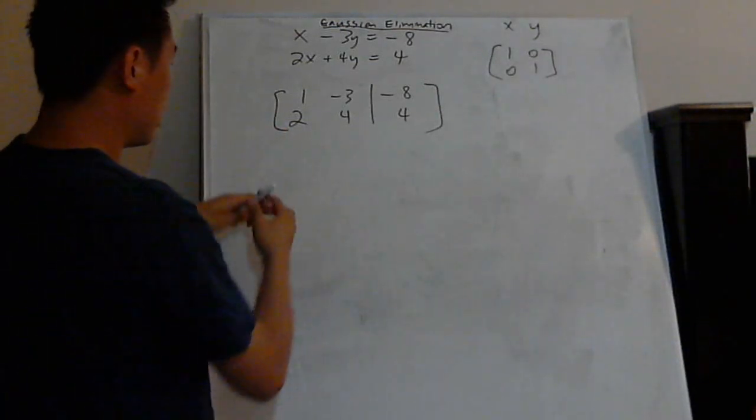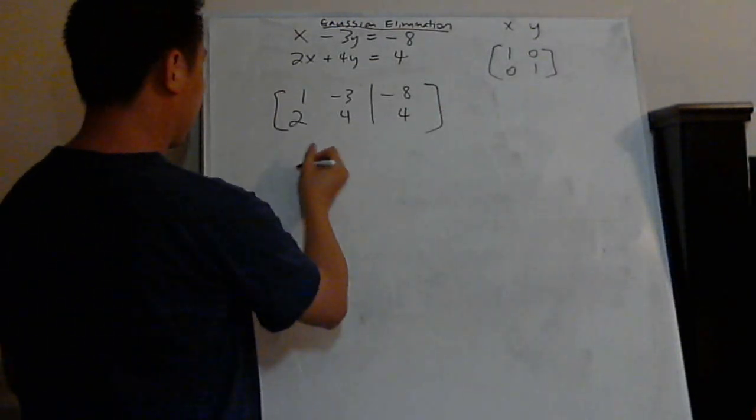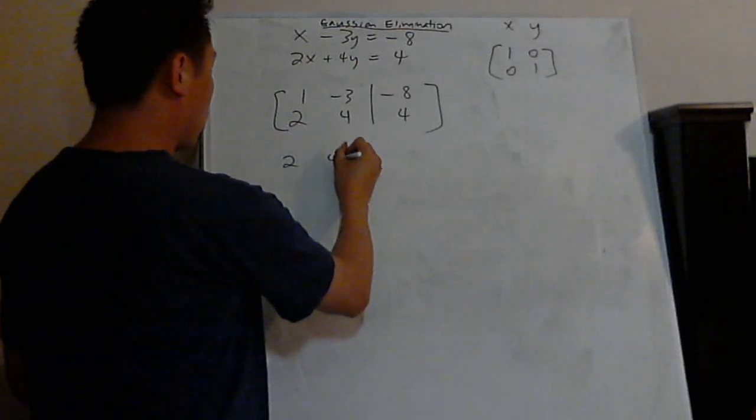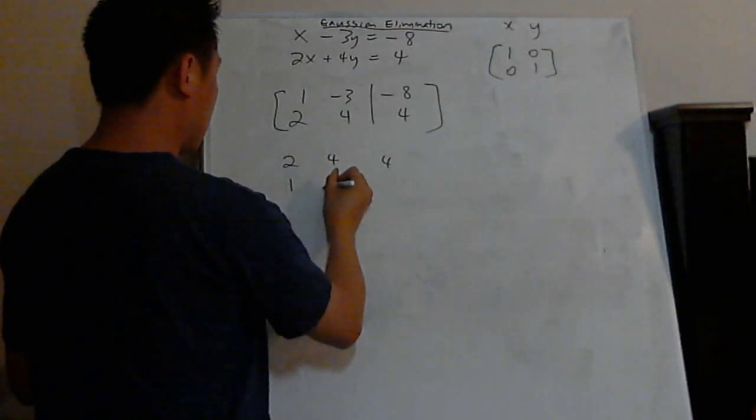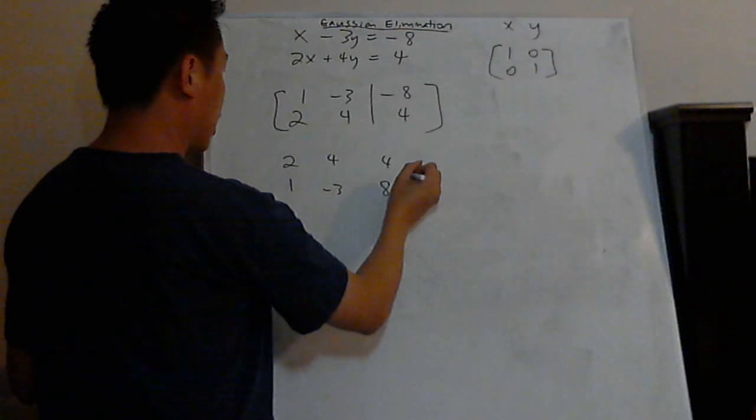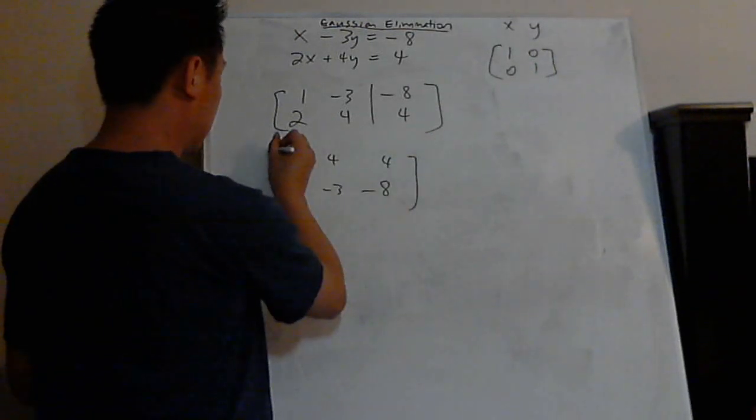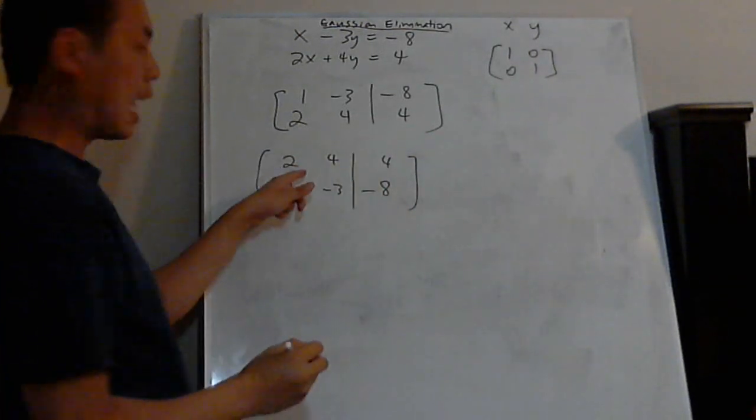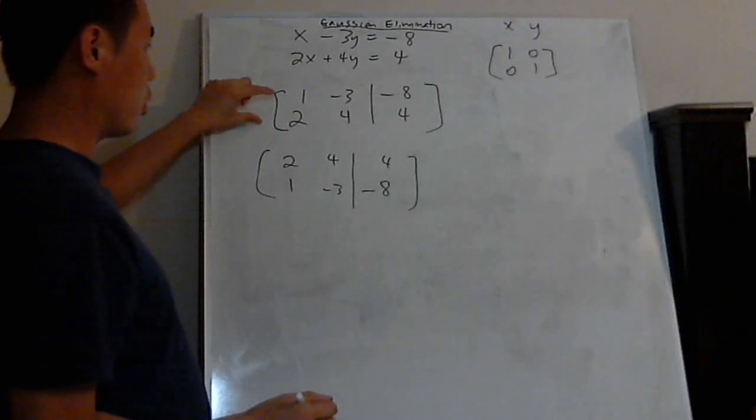So basically, I can put this on top, like for example, 2, 4, 4, and 1, negative 3, negative 8. That's legal. You can switch rows.